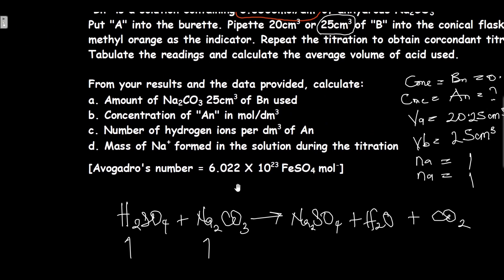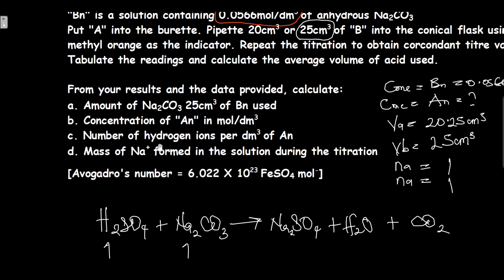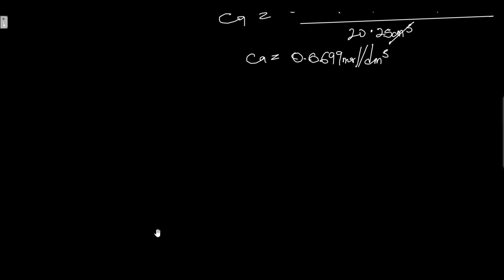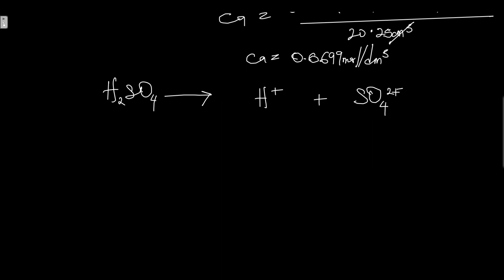Now we go to the next question: calculate the number of hydrogen ions per dm³ of A. The acid is sulfuric acid, which is a strong acid. It ionizes completely in water to give hydrogen ions and sulfate anions. To balance the equation, we get two hydrogen ions. Once it ionizes completely in water, it gives us two molecules of hydrogen ions.